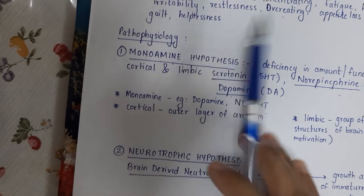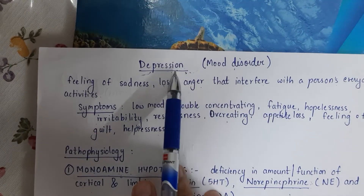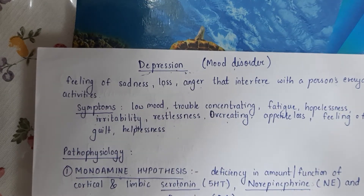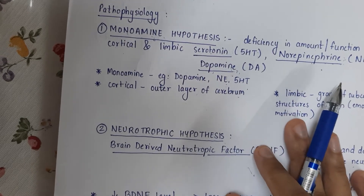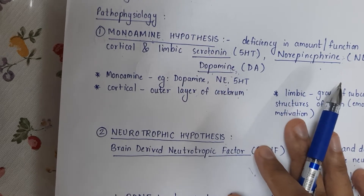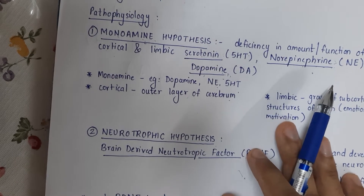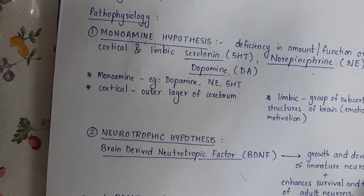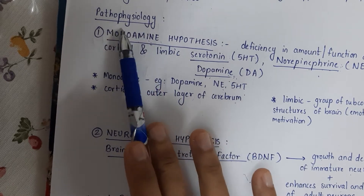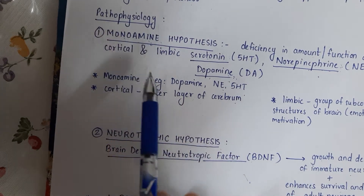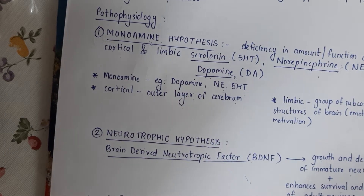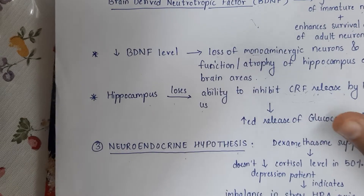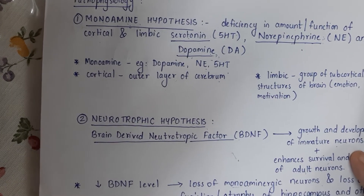For psychiatric disorders like depression, Parkinson's, or schizophrenia, there is no clear pathophysiology, so we consider the hypothesis. There are three main hypotheses involved. Don't be scared — there are three, but it is very simple.